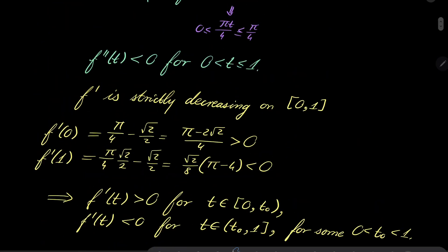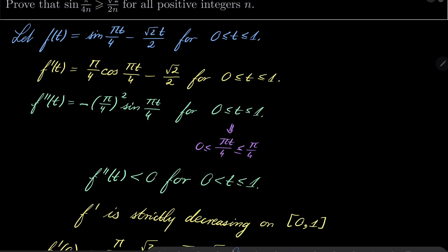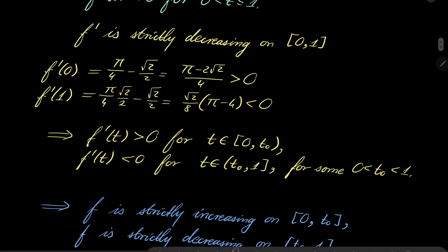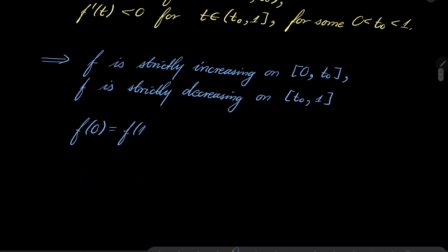And notice that what is f(0)? f(0) = sin(0) - 0 = 0. And f(1)? sin(π/4) = √2/2, so it's also 0. So both f(0) and f(1) are 0, which implies that for every t between 0 and 1, f(t) > 0.